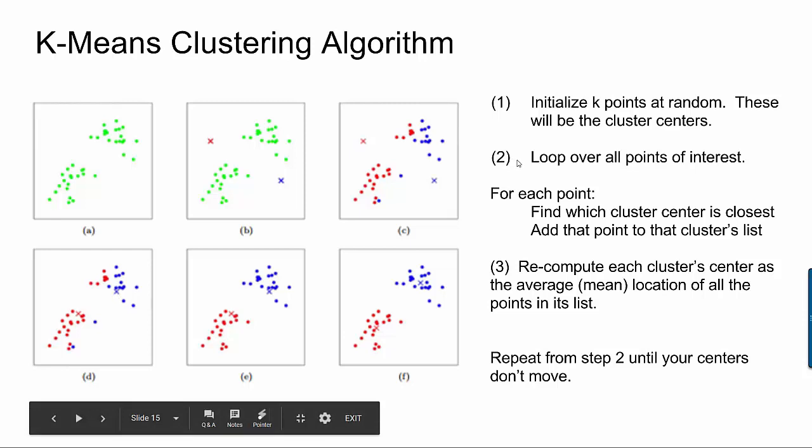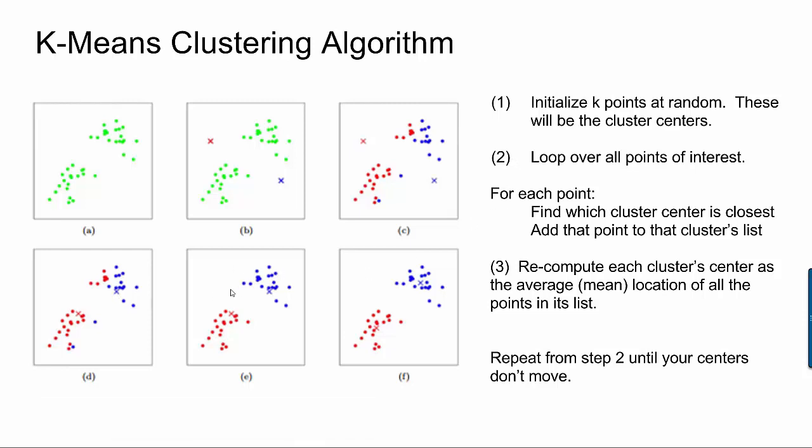And here you can see it's approximately there. If you do the same thing for blue, you get a new recalculated center approximately here. Then you repeat from step two. So again, we're going to loop over all of the points that we've previously assigned, but now the centers have changed. And so for each new point, we're going to say, all right, what's your distance from the new red center? What's your distance from the blue center?